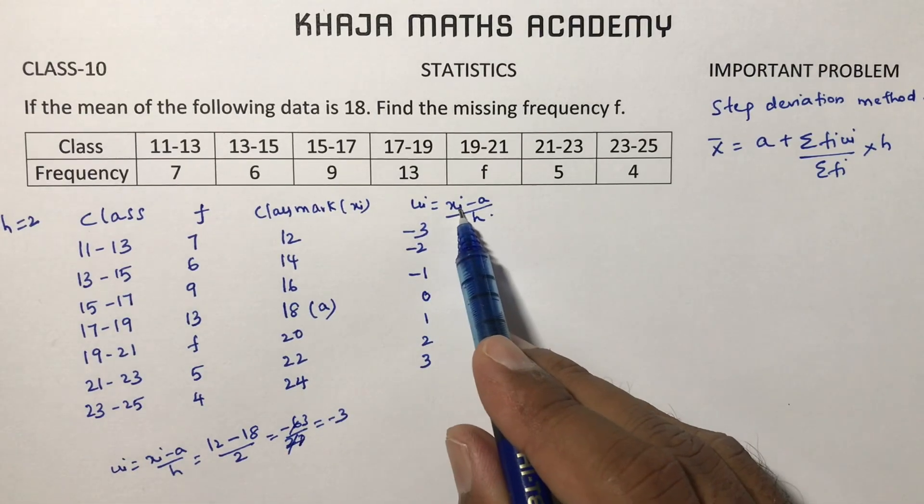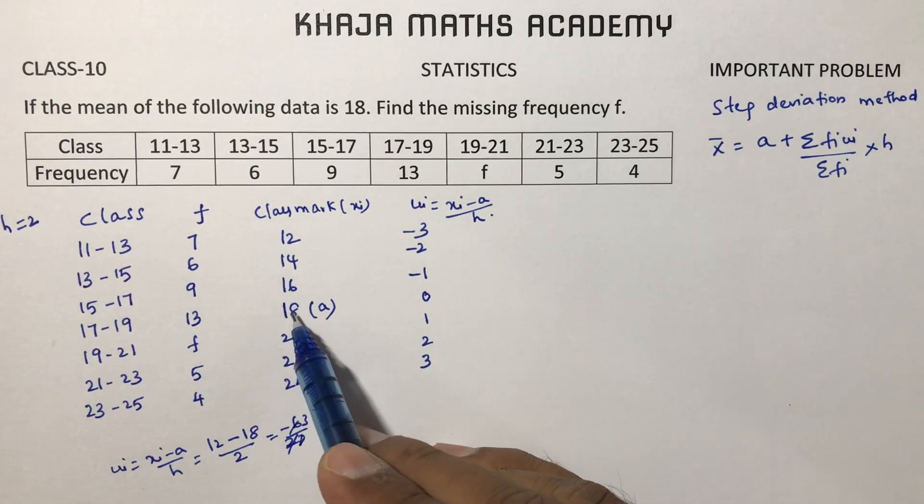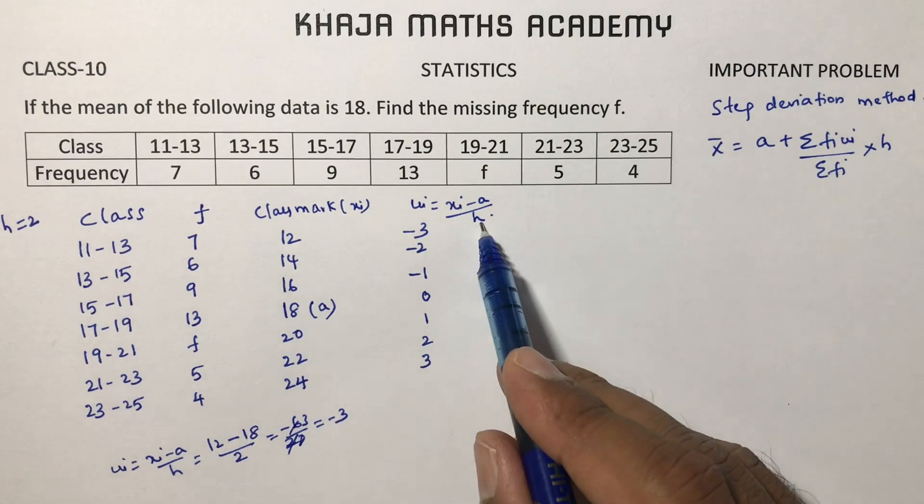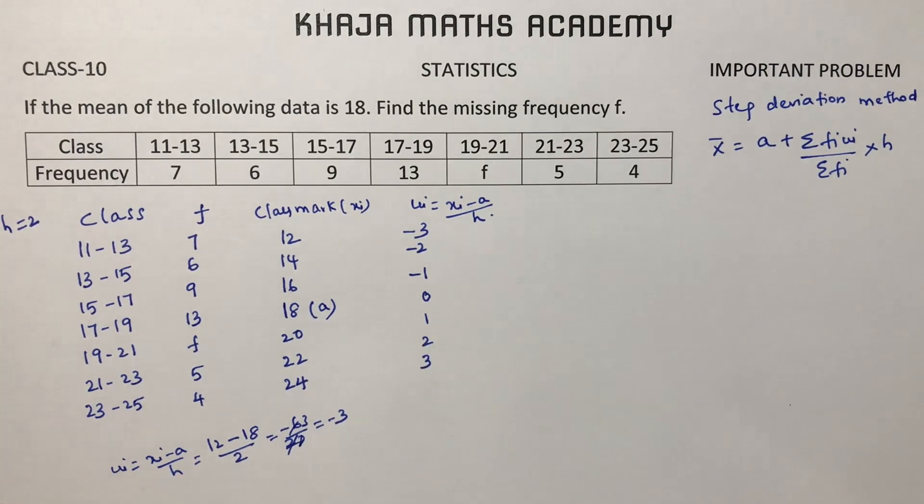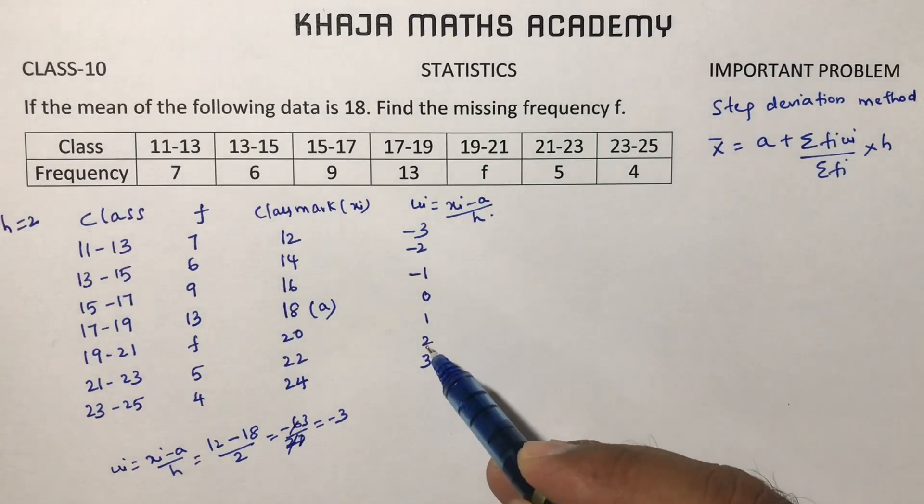ui formula is xi minus a by h. Here xi is 20, a is 18. 20 minus 18 is 2. 2 by h is again 2, so 2 by 2 is 1. In the same way, 2 and 3.